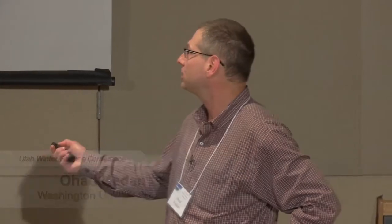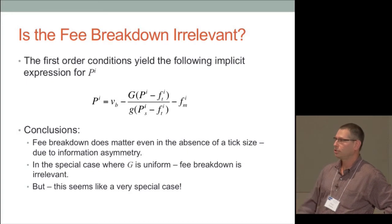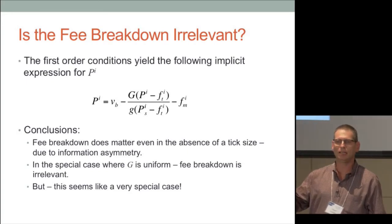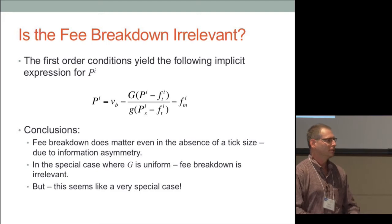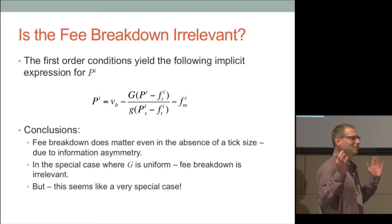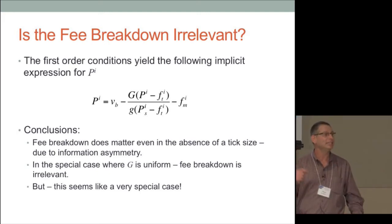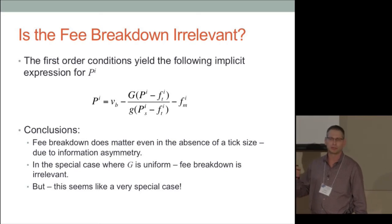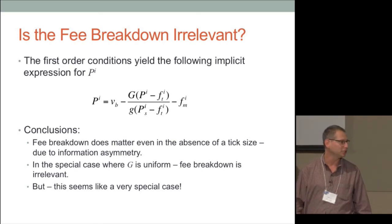Mao's neutrality result is actually correct because he assumes a uniform distribution. With a uniform distribution the denominator in the first-order condition becomes a constant — the cumulative is just linear — and everything works out. So indeed in the special case of a uniform distribution you restore the neutrality result, but in general it actually fails.